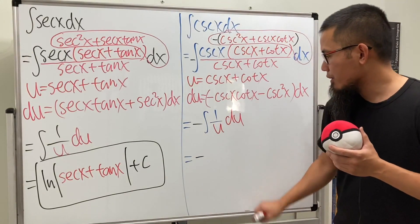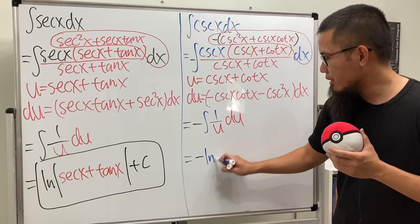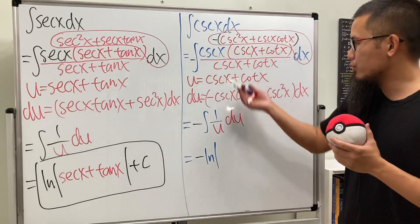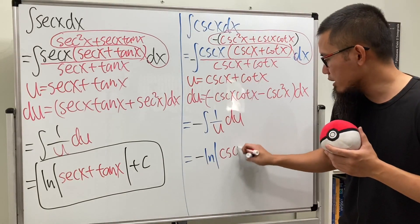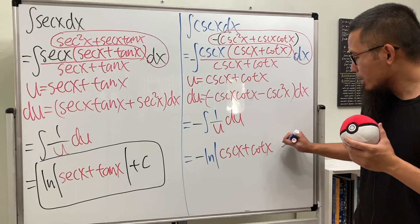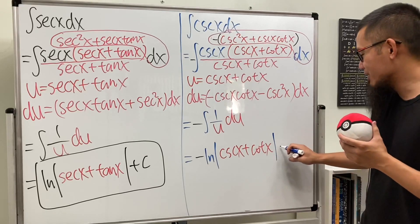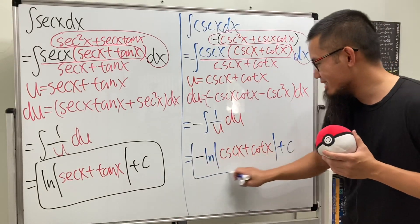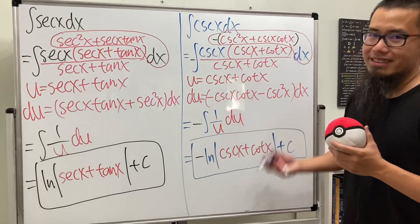And then the integral of this is ln absolute value of u, which is that. So let's put down cosecant x plus cotangent x. And you know what? We are done. Have to put down the plus C.